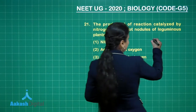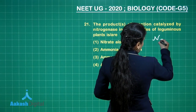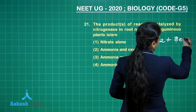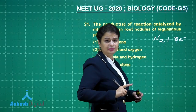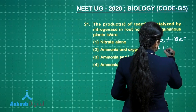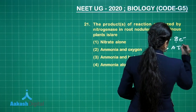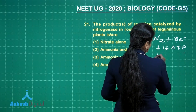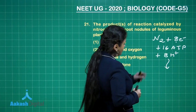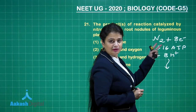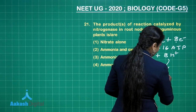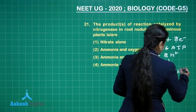At the time of N₂ fixation, 8 electrons are required, and per electron you need 2 ATP, so 8 × 2 = 16 ATP are required. Along with that, 8 hydrogen ions are needed. N₂ is reduced to ammonia, forming 2NH₃, and along with that, 1H₂ is also formed.